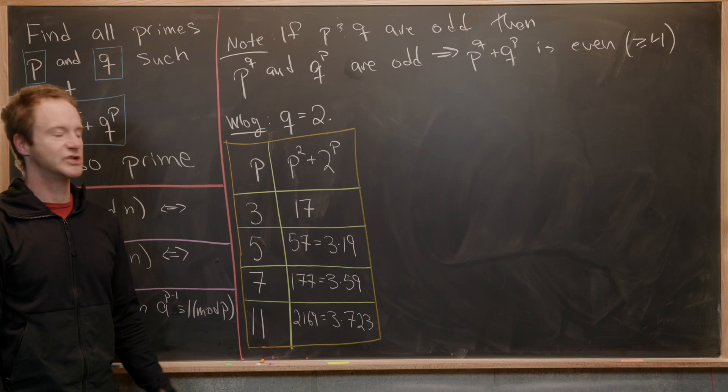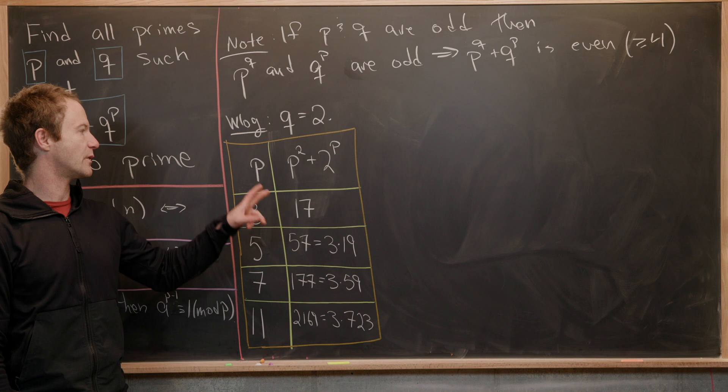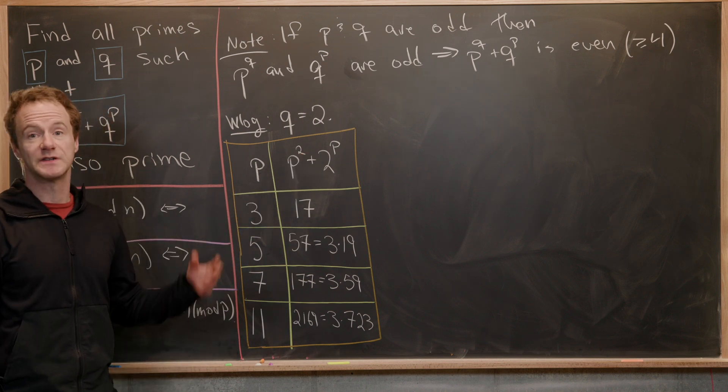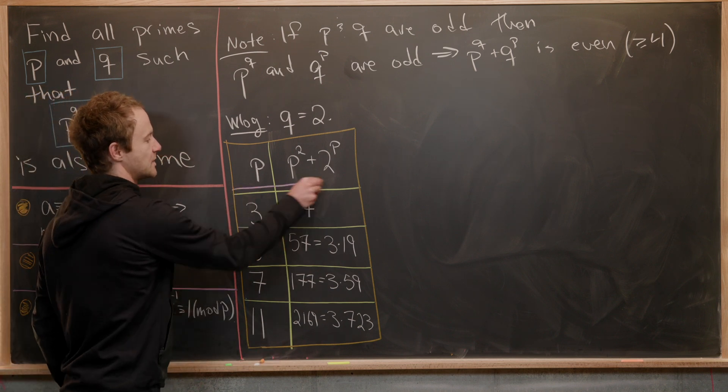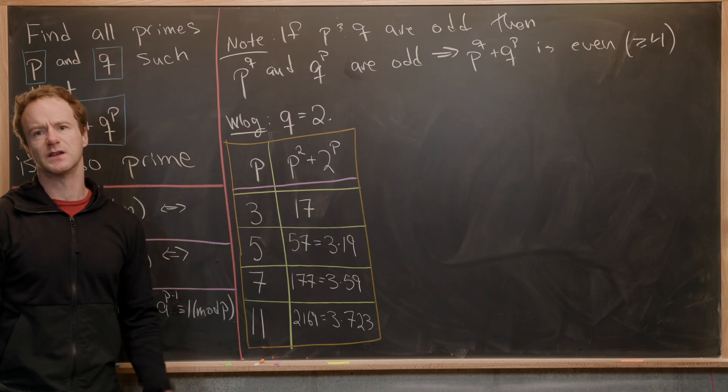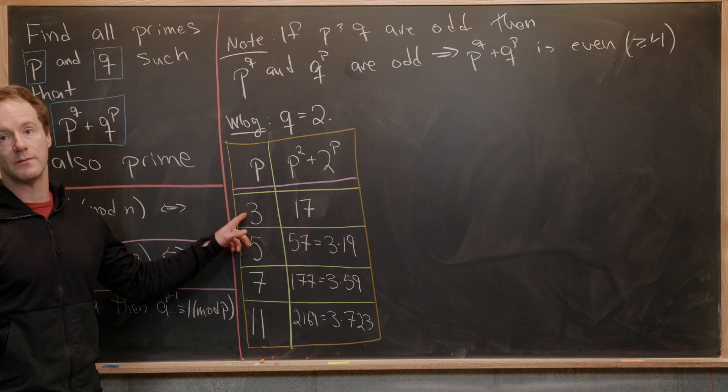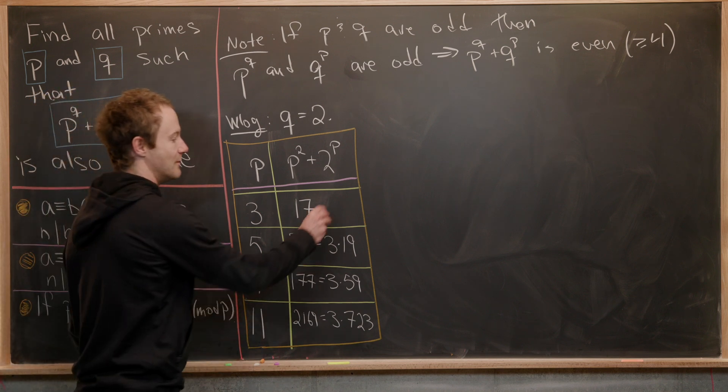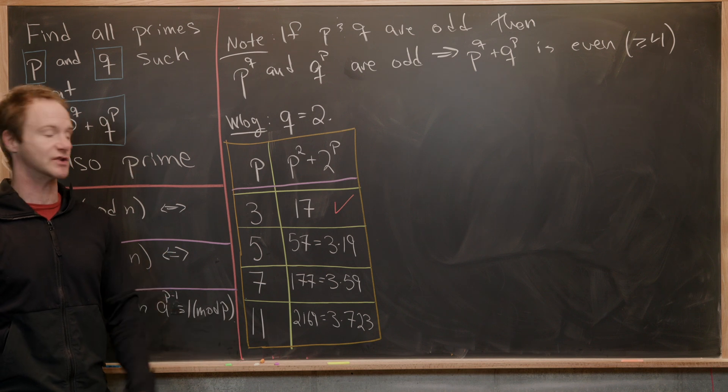So here's our little exploratory chart. Again, I've set q equal to two, which means what we really need to calculate is p squared plus two to the p for different primes p. In our chart here, we've got this column is the p column, and then this column is the p squared plus two to the p. For our prime p equals three, we see that we get 17, which is a prime. So I'll put a check mark next to that to say that yeah, we got a prime in this case. So that's good.